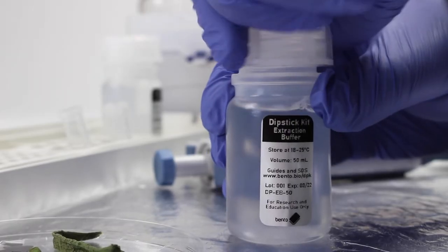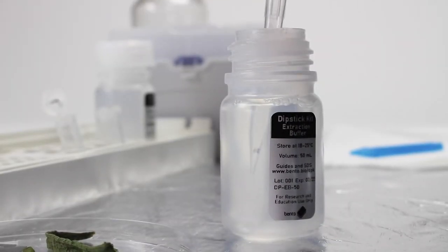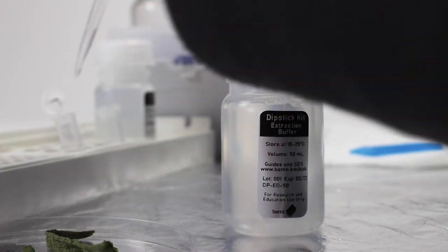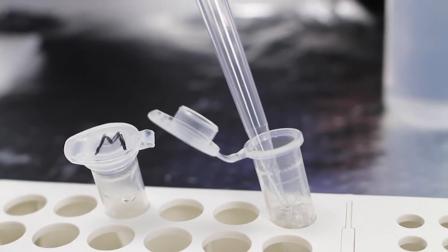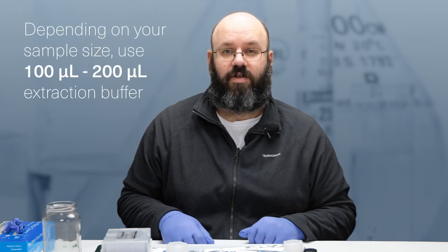The first step of the dipstick method is a cell lysis step using the extraction buffer. The buffer contains a dilute ionic detergent and salt. Aliquot a small amount of extraction buffer into the first 1.5 mm tube. The exact amount depends on the size of your sample, but it's generally around 100 microliters to 200 microliters.